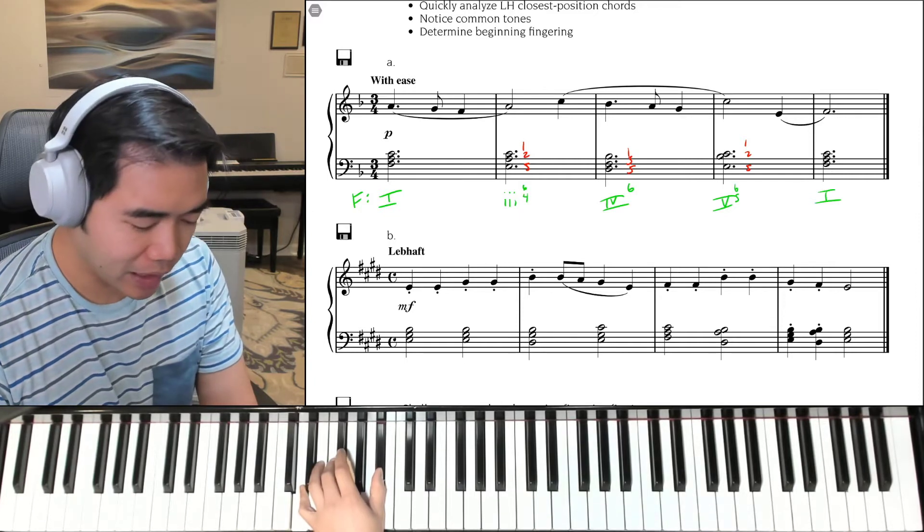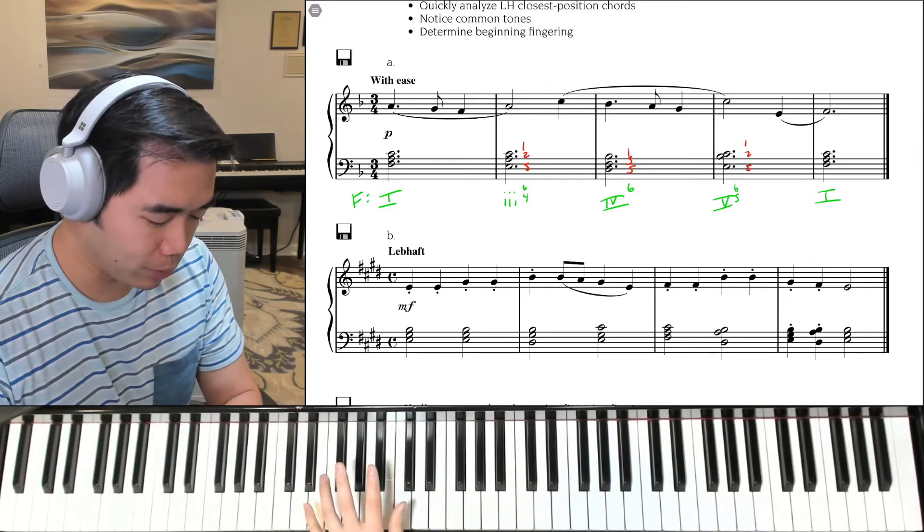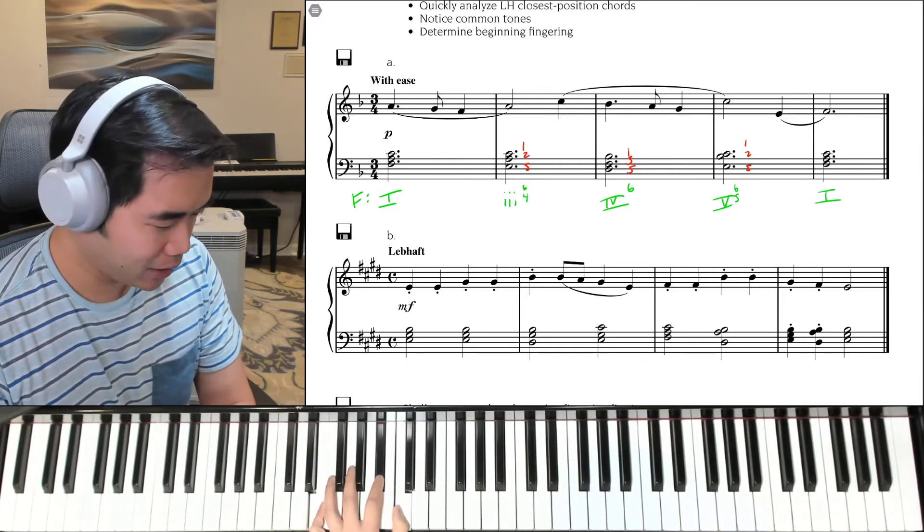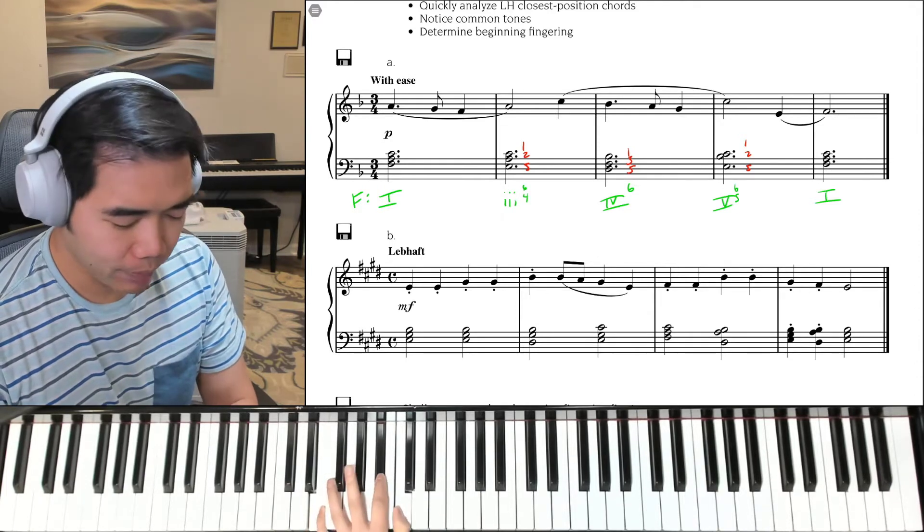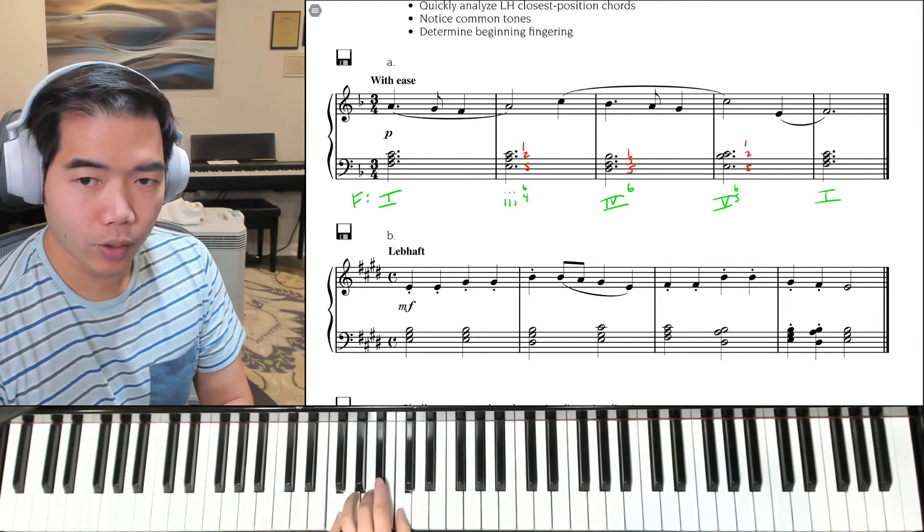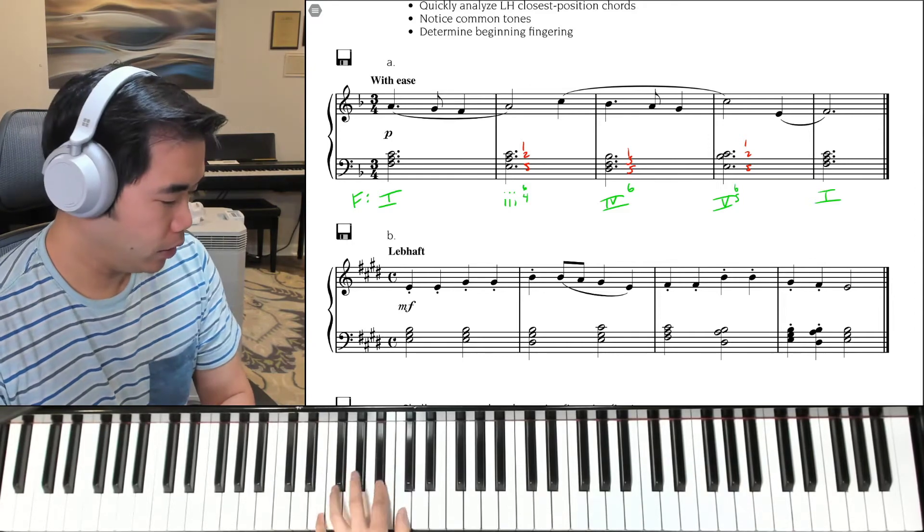When you're comfortable with that, then you can go to the 5-7, which is going to be E, B flat, C. And then back to 1, 5-7, 1, 5-7, 1.